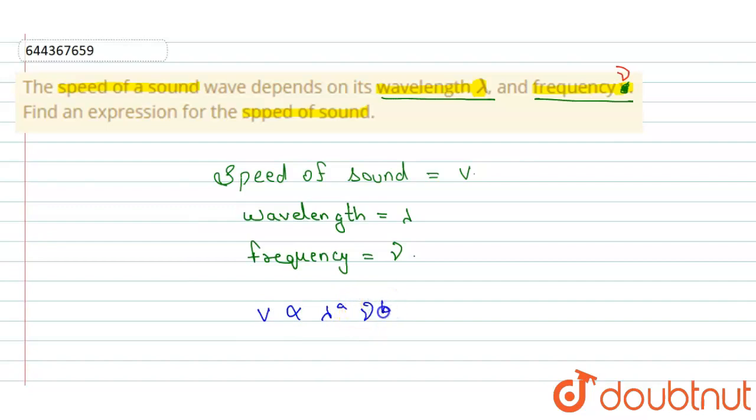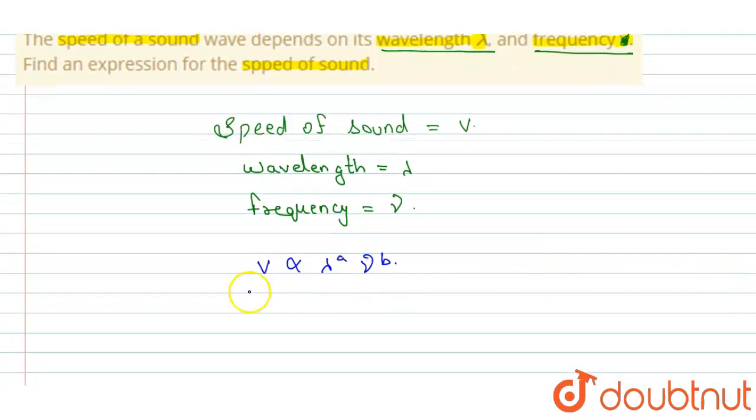So here, for removing the proportionality sign, we write a constant k, so v equals k lambda^a mu^b.